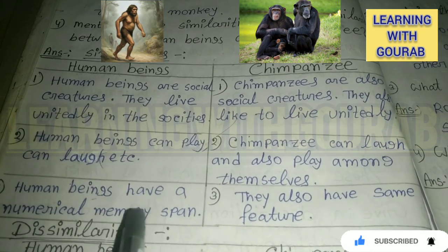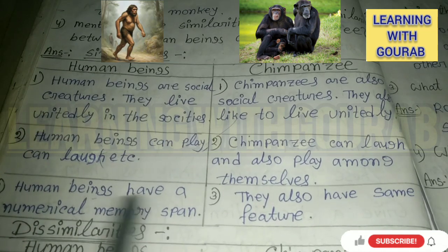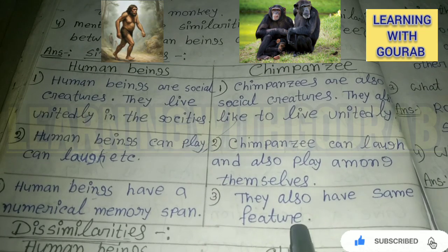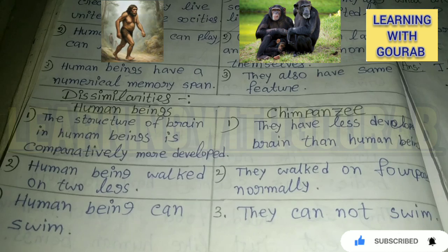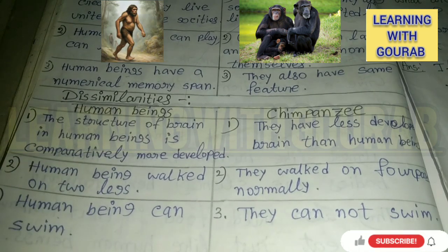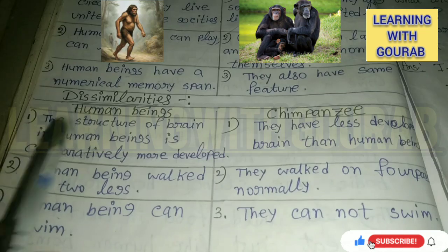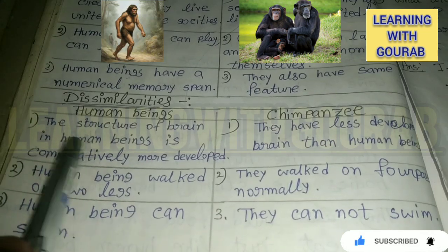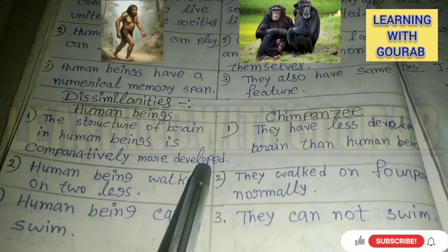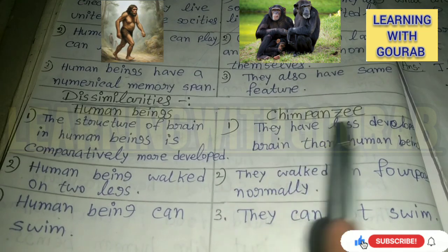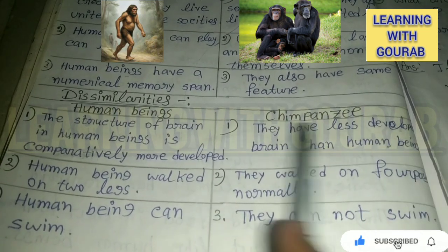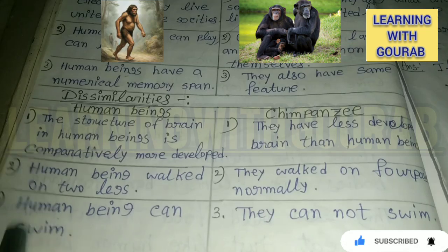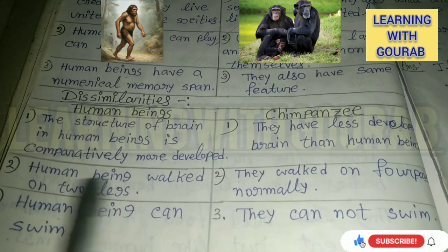Dissimilarity one: the structure of the brain in human beings is comparatively more developed, while chimpanzees have a less developed brain than human beings. Dissimilarity two: chimpanzees can walk on two legs, while human beings naturally have two legs for walking.